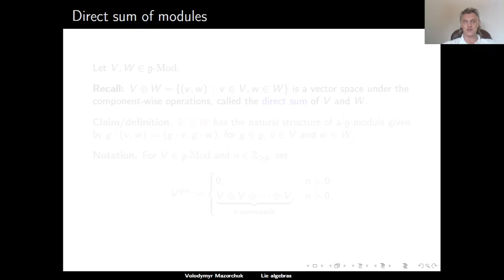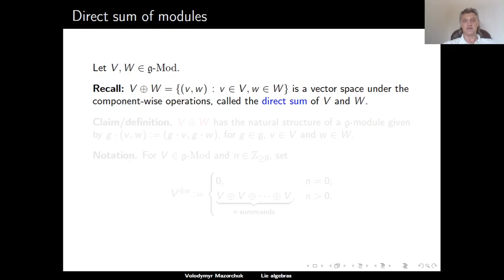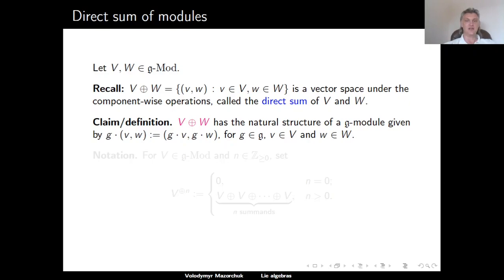Let's talk about constructions for getting new g-modules from existing ones. We start with the direct sum. If we have two g-modules v and w, the direct sum v ⊕ w is the vector space of all pairs (v, w) with component-wise addition and scalar multiplication. The direct sum has a natural structure of a g-module defined component-wise: acting by g on the pair (v, w) gives the pair (g·v, g·w) for all g in g, v in v, and w in w.